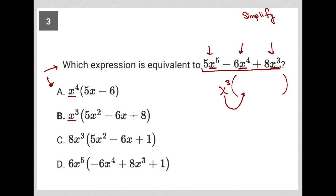What do we multiply x cubed by in order to get 5x to the fifth? That would be 5x squared. And what do we multiply x cubed by to recreate negative 6x to the fourth? That would be negative 6x.